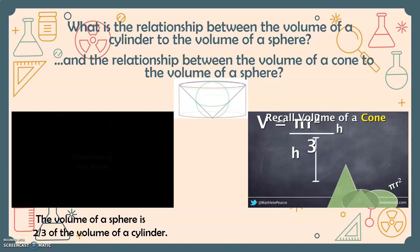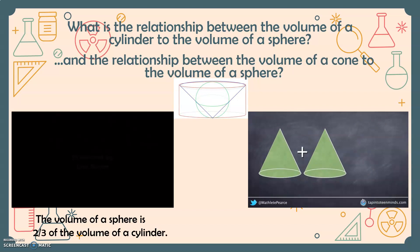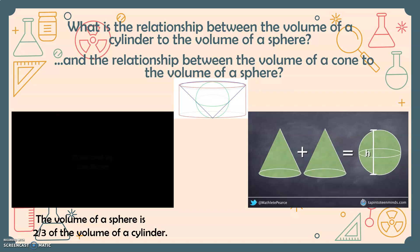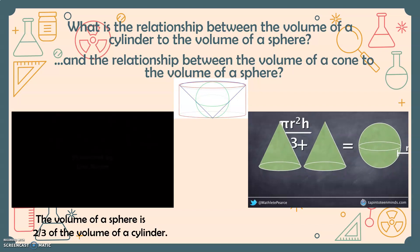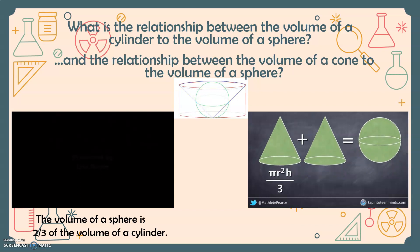As we saw in the experiment, it took two cones to fill up a sphere with the same radius. It's important to note that the height of the two cones would be the same as the height of the sphere, and the radius of the two cones would also be the same as the radius of the sphere. So this really means that we could find the volume of one cone and simply add another volume of a second cone to determine the volume of a sphere.